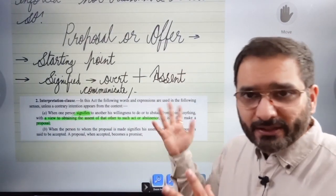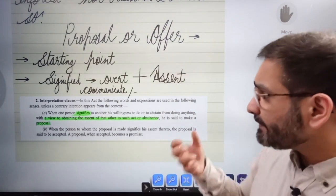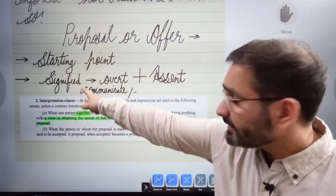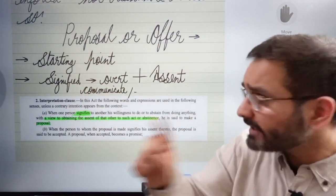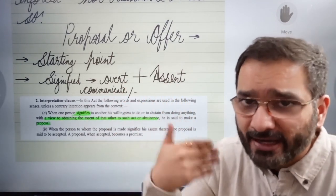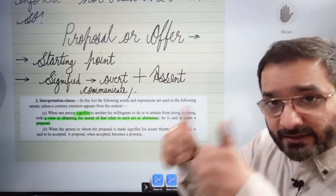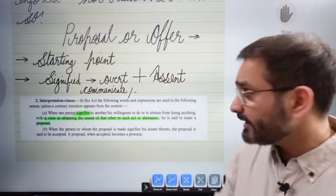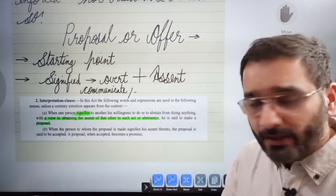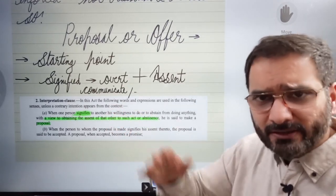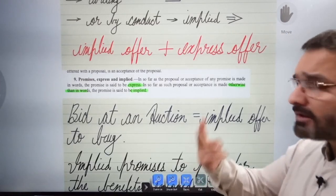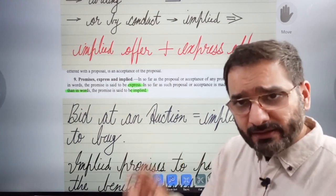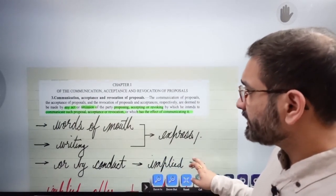Now we start with the proposal, also called the offer — this is the starting point of a contract. The proposal or offer is the crucial element. There has to be a signification and an assent from the other side — they communicate their consent, their 'yes,' to you. The two elements from Section 2: 'signifies to another' and 'with a view to obtaining the assent' — the assent is crucial.